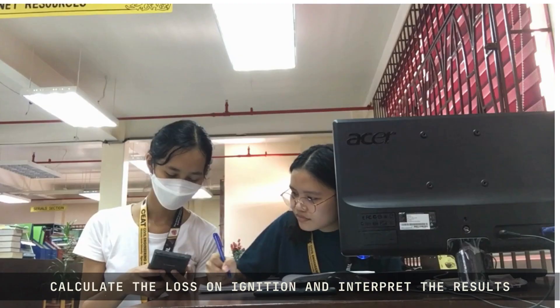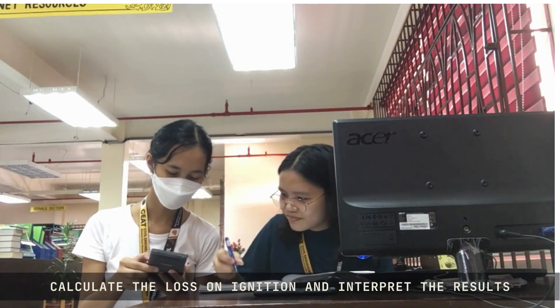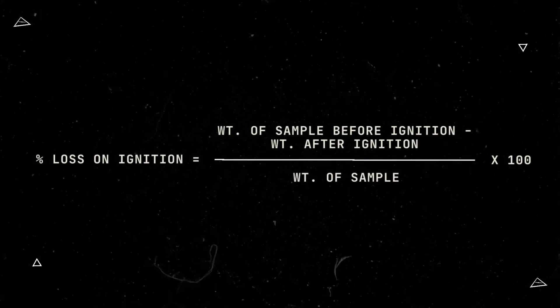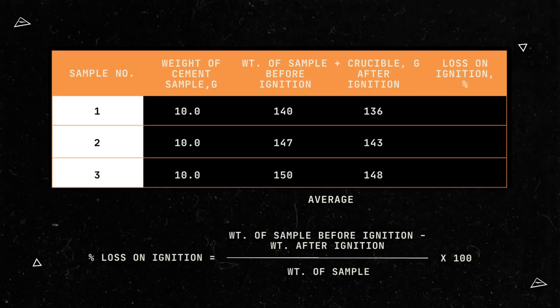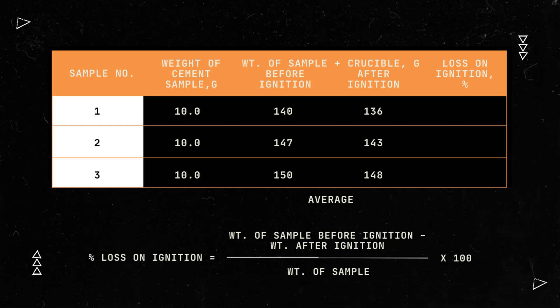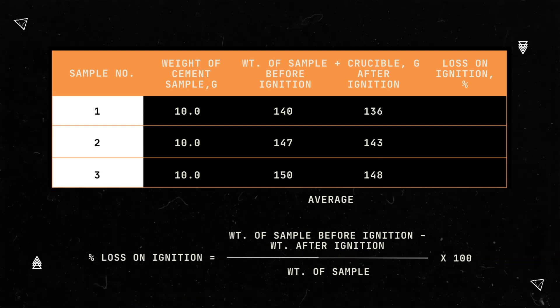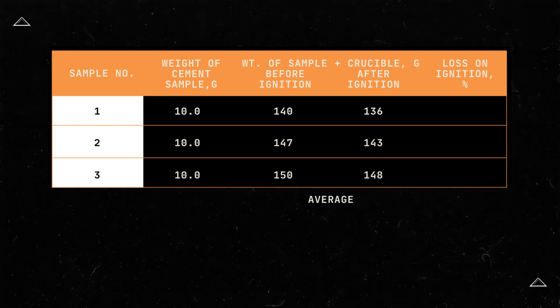Then, subtract the empty crucible weight from this new weight — that is the sample's dry weight. Let's proceed to the calculations. To calculate the loss on ignition, we use the following formula.